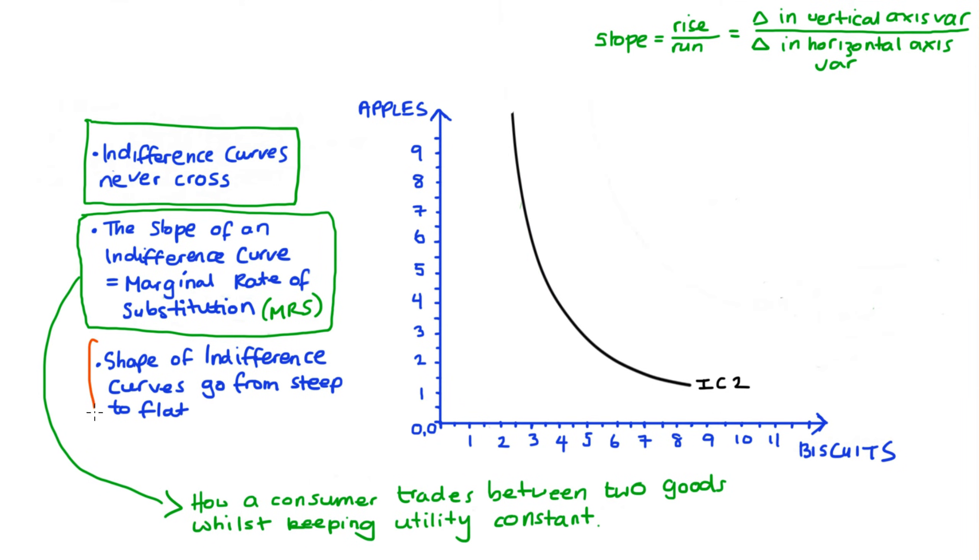So this actually follows on nicely to our last point, which concerns the shape of our indifference curves. Now, not only are our indifference curves downward sloping, but they also go from steeper to flatter. This means that our slope is getting smaller in absolute value. So whilst the slope maybe up here might be negative four, which means that I trade off four apples for one biscuit.